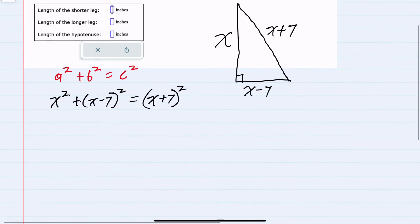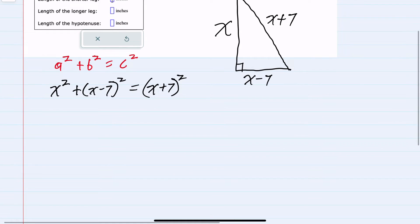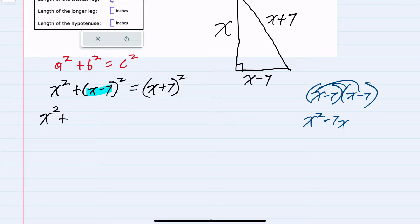From here we can start to simplify and solve. First x minus seven squared would be x minus 7 times x minus 7. Distributing we have x squared minus 7x, distributing the minus x, minus 7x plus 49. So x squared minus 14x plus 49.